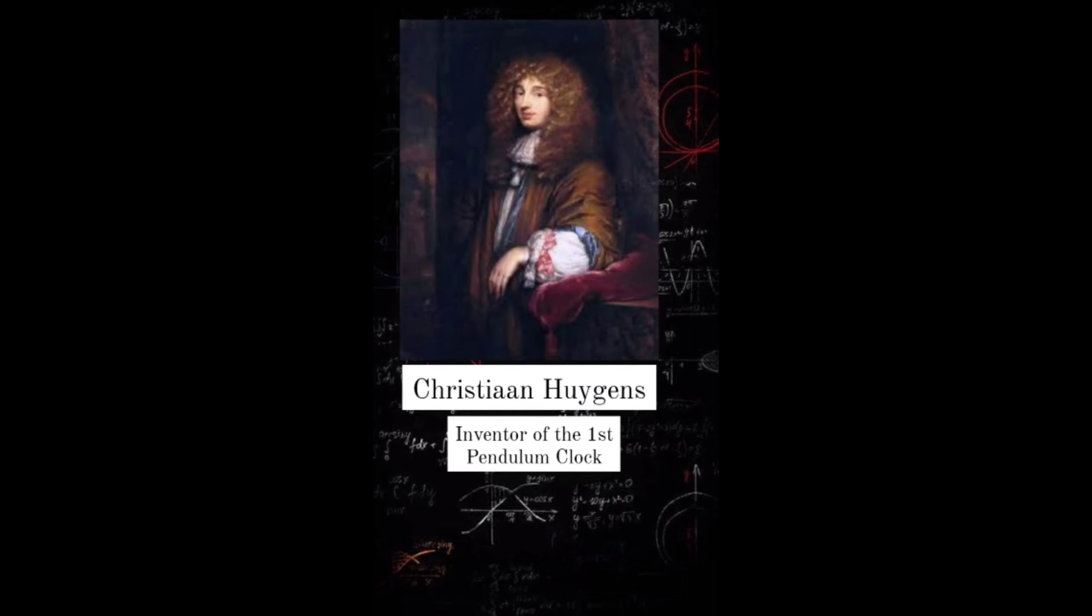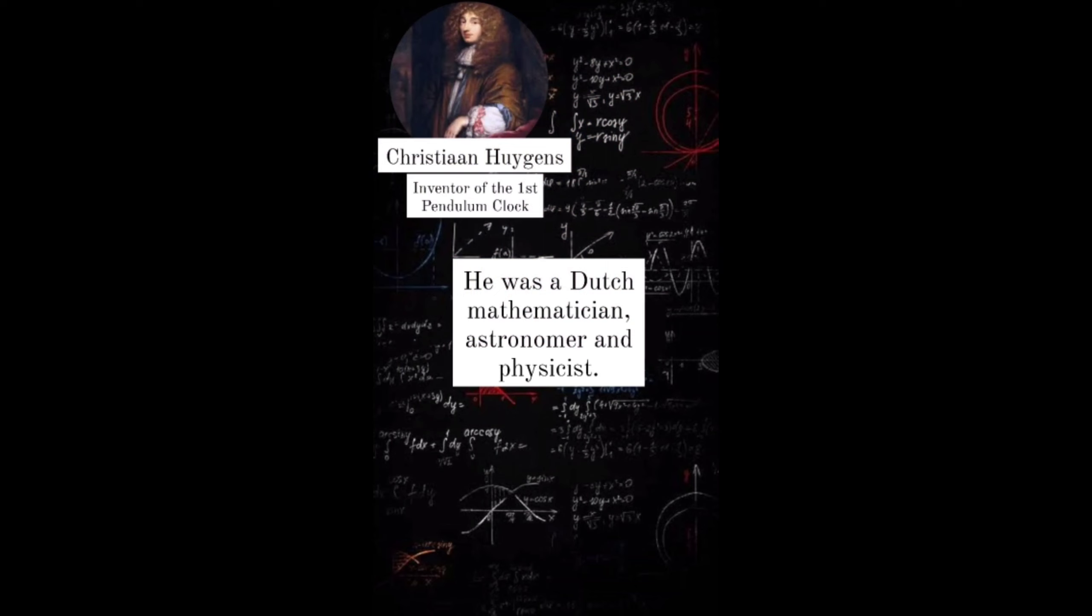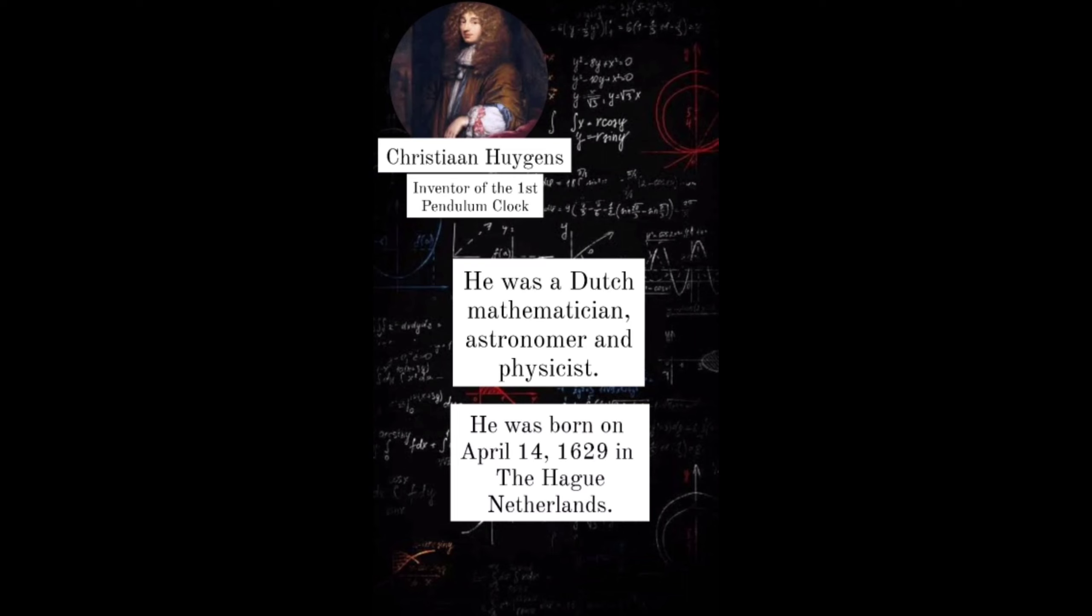Did you know? Pendulum clock was invented by Christiaan Huygens. He was a Dutch mathematician, astronomer, and physicist. He was born on April 14, 1629 in The Hague, Netherlands.